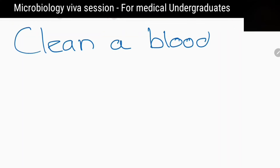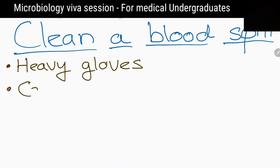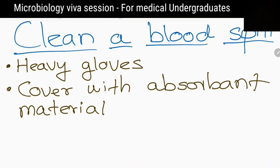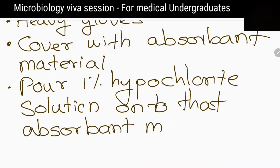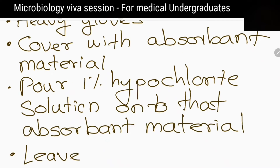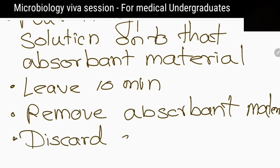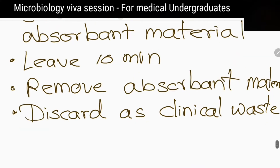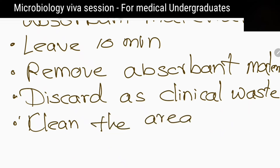What are the steps to clean a blood spill on theatre floor? Wear heavy duty gloves. Cover the spill with an absorbent material like paper towel or gauze. Pour 1% hypochlorite solution onto that absorbent material until it is well soaked. Leave for at least 10 minutes, then remove the absorbent material and discard as clinical waste. Clean the area with detergent and water and allow to dry.